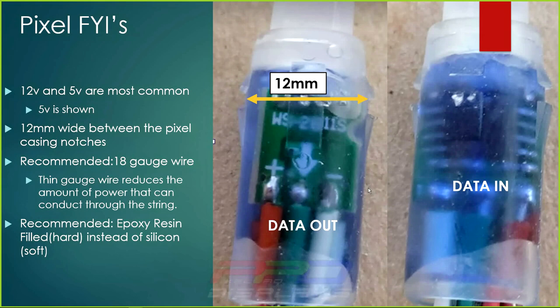It's also recommended that you use pixels hard-filled with epoxy resin as opposed to silicone. There are soft pixels and hard pixels — you want the hard pixels. Epoxy resin is far more resilient than silicone. Silicone can work for a number of years, but after a few seasons it can shrink, allowing water to get in and ruin the electronic components. That doesn't mean you can't use silicone pixels — just use them inside the house or bring older ones inside when they start having issues.